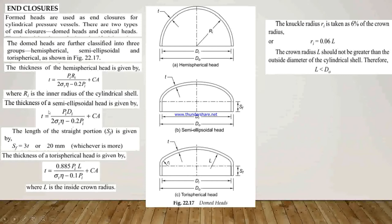The thickness of the hemispherical head is given by T = P·Ri / (2·σT·η − 0.2P) + Ca, where Ca is the corrosion allowance and Ri is the inner radius of the cylindrical shell. The thickness of the Semi-Ellipsoidal Head is given by T = P·Di / (2·σT·η − 0.2P) + Ca. And the length of the straight portion Sf is calculated as Sf = 3T or 20 mm, whichever is more.